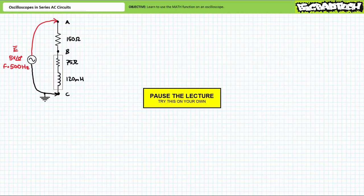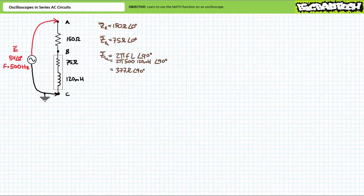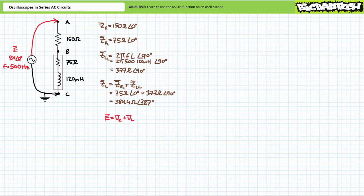Pause the lecture and try this on your own. If you're tracking, you should have obtained the following results. The complex impedance of the 150 ohm resistor is 150 ohms at an angle of zero — let's call this impedance ZR. The complex impedance of the non-ideal inductor takes a bit more effort. The resistive portion is 75 ohms at an angle of zero degrees. The inductive portion of the 120 millihenry inductor at 500 hertz is roughly 377 ohms at an angle of 90 degrees, giving a total non-ideal inductor impedance of roughly 384.4 ohms at an angle of 78.7 degrees — let's call this ZL. Kirchhoff's voltage law gives E equals VR plus VL.